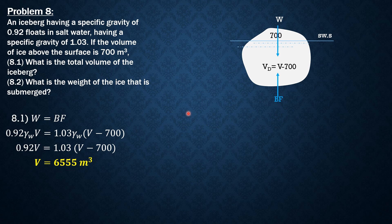For the second part — what is the weight of the ice that is submerged? The weight of the ice that is submerged is just the weight of that portion of the ice. It equals the specific weight of the ice, 0.92 times 9.81, times the volume that is submerged, which is (V − 700). So: weight of submerged ice = specific gravity of ice × γ_water × volume displaced.